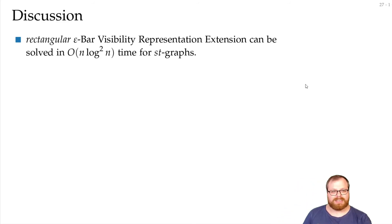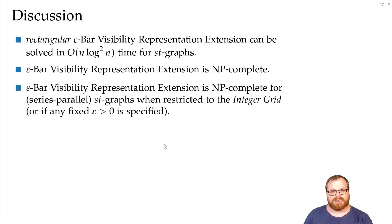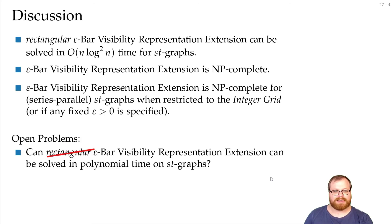Let's conclude. For Rectangular Epsilon Bar Visibility Representation Extension, we can solve it in order of n log squared n time for ST graphs, while it is NP complete in general, and it's also NP complete when restricted to the integer grid. On the other hand, there are still some open problems. If we drop the rectangular, then we don't know if we can still do it in polynomial time.